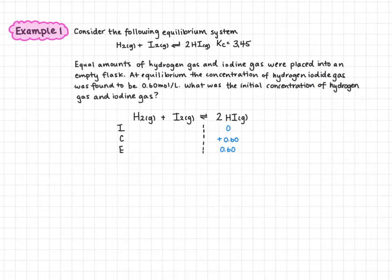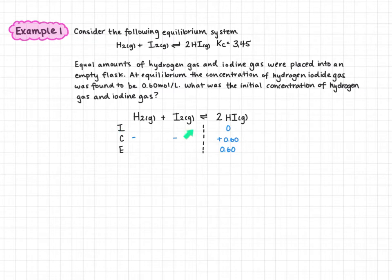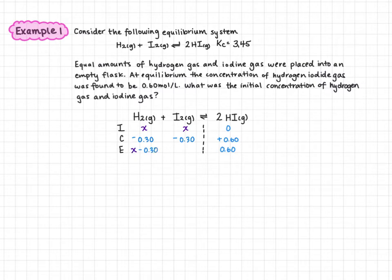For hydrogen and iodine, we fill in what we can. If the change for hydrogen iodide is positive, the change for hydrogen and iodine is negative. Hydrogen iodide has a coefficient of 2, so this value must be divided by 2 to match the coefficients for hydrogen and iodine. So 0.60 divided by 2 gives a change of negative 0.30 for both. We label the initial concentration as x, so the equilibrium concentration — adding down the column — is x minus 0.30 for both species.